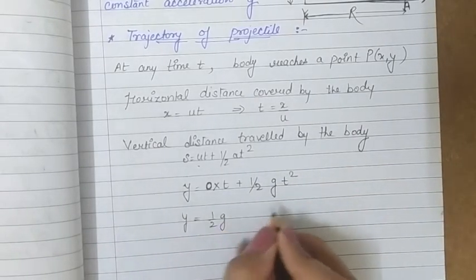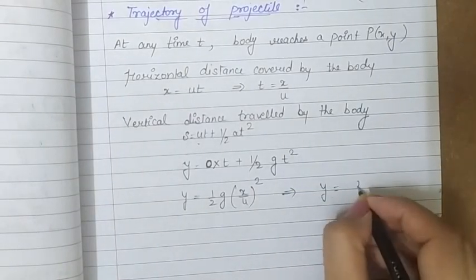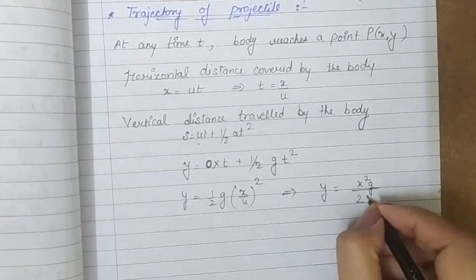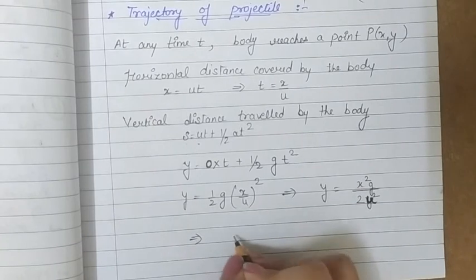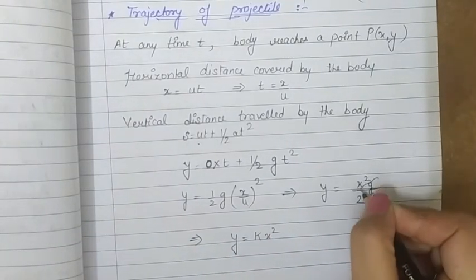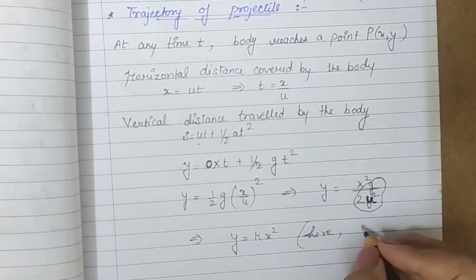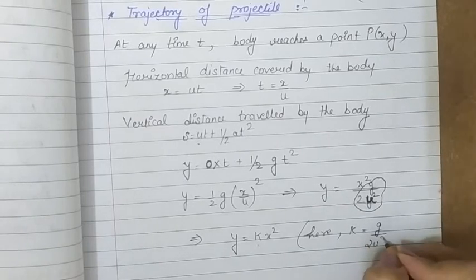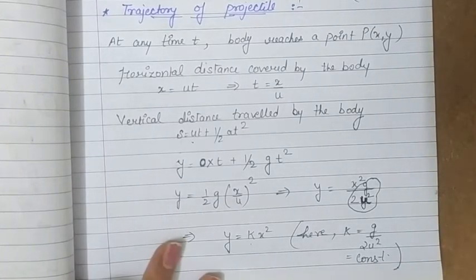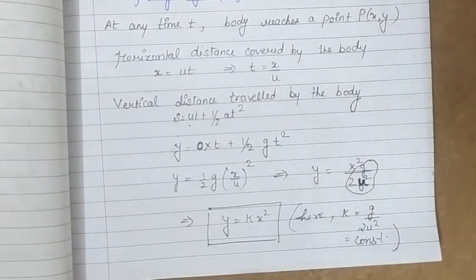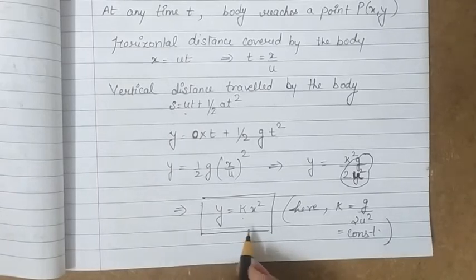Substituting t = x/u, we get y = ½g·(x/u)², which simplifies to y = (g / 2u²)·x². We can write this as y = kx², where k = g/(2u²) is a constant, since u (the given velocity) is also constant.